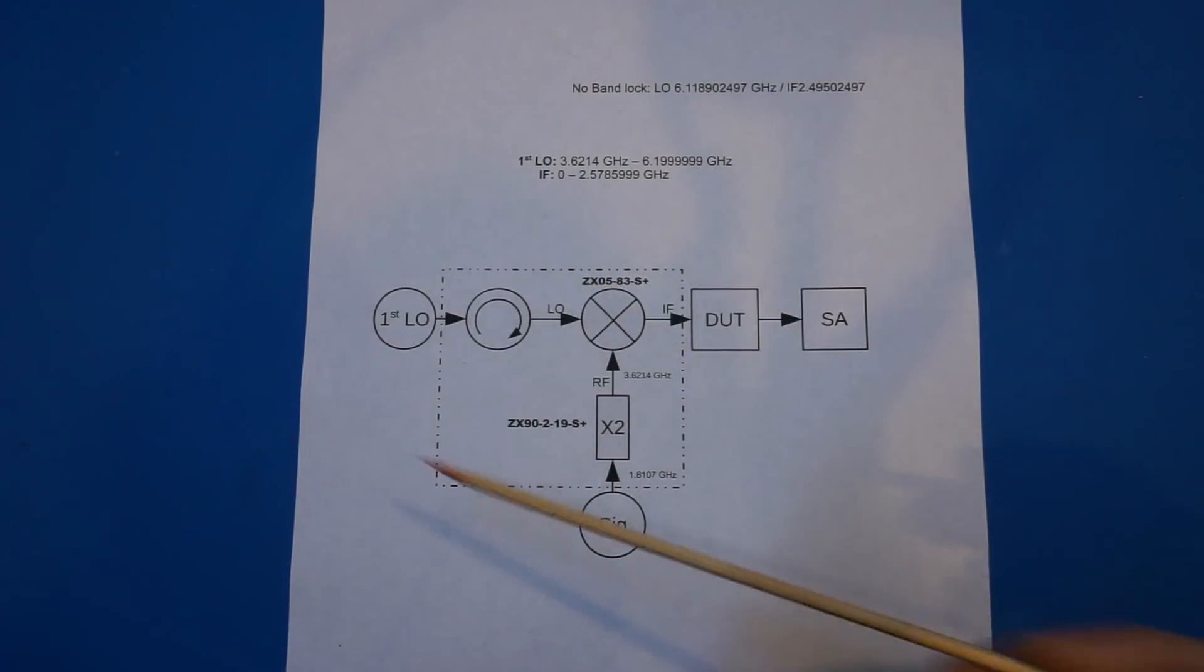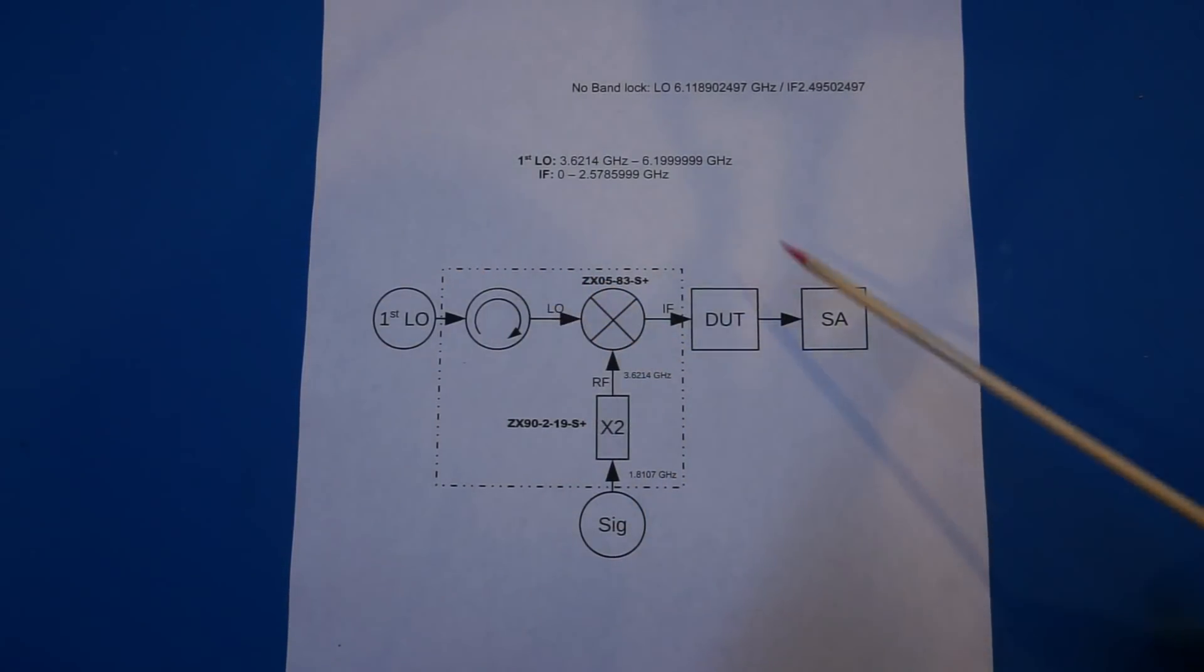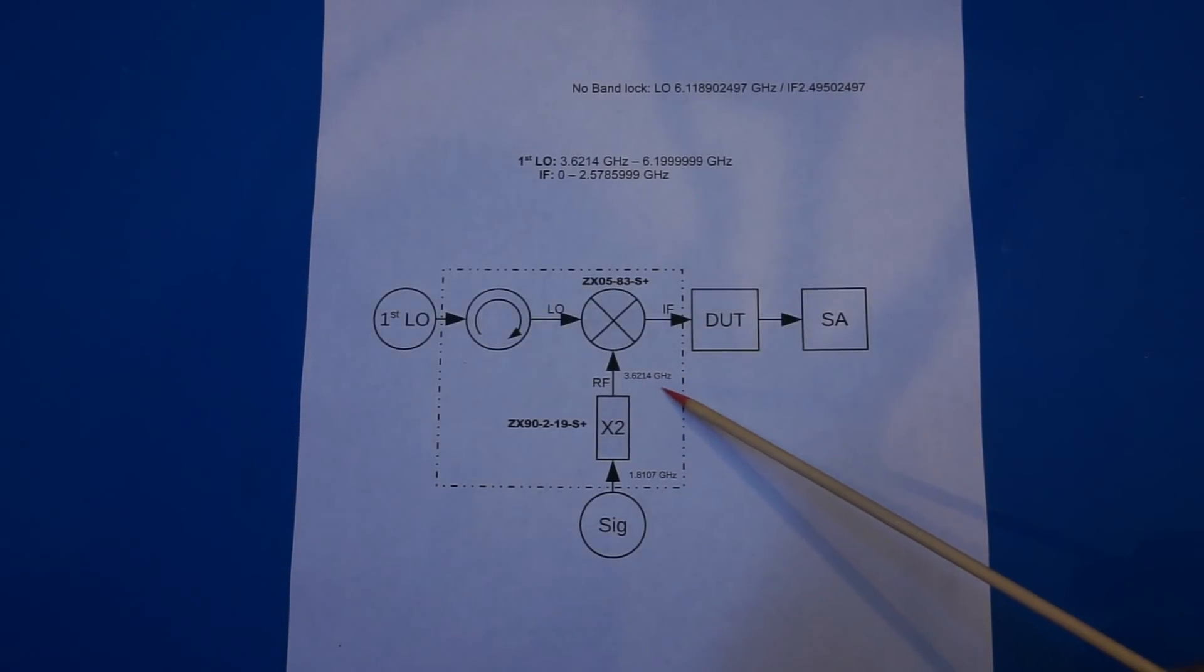So here's a diagram of the arrangement of what I did previously. As you can see, the key to this tracking generator is the ability to obtain this stable reference frequency of the first LIF of the 8566B. In this case, it's a 3.6214 GHz signal. In its 0 to 2.5 GHz baseband, for example, the first LO of the 8566B goes from 3.6214 GHz all the way up to 6.1 or 6.2 GHz, depending on whether or not the band is locked.